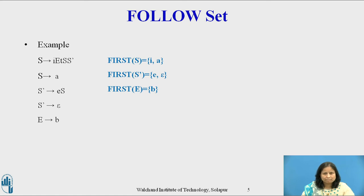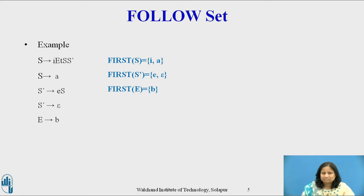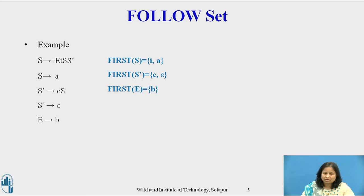Consider the second grammar for the dangling-if. The productions are: S derives i E t S S' or a, where i means if, E means expression, t means then, S means statement, and S' means statement-prime. S derives if-expression-then-statement S' or a. S' derives e S or epsilon, where e means else, and E derives b. The first set is already computed in the previous video and is given on the slide. We put dollar in the follow of S by Rule 1.